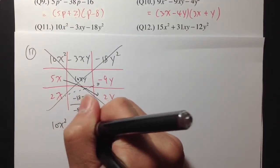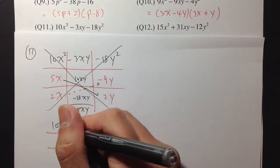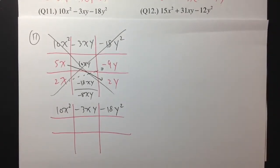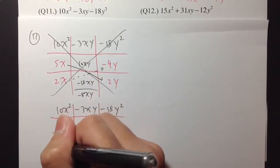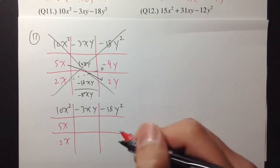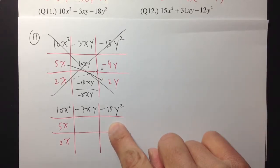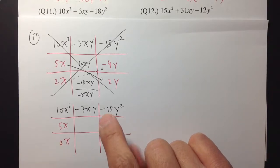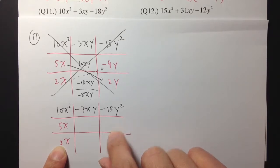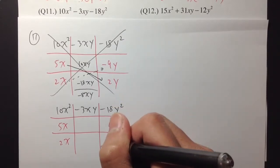So 10x squared minus 3xy minus 18y squared — we are just going to try another combination. I still want to use 5x and 2x. And to get 18, I can also use 6 and 3 — 6 and 3 will also give me 18. If I put 6 right here, I will have to multiply with a 2, that will be 12. And then 3 times 5 will be 15. I think that will work. Then we put 6 right here and 3 right here.